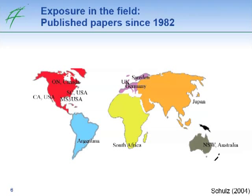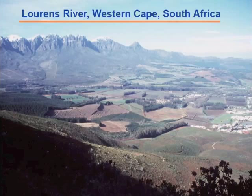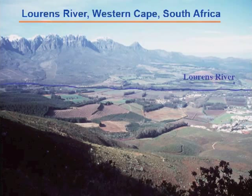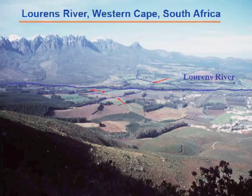Since 2000, a couple of groups looked at insecticide exposure in aquatic systems in some sites in Argentina, South Africa, and Australia mainly. But our knowledge is still relatively low, particularly for the southern hemisphere. I would like to give you an example from South Africa, from the Western Cape — a region strongly dominated by wine growing and fruit orchard growing. Here you can see the Lawrence River flowing through this valley, with several tributaries that may be directly influenced by non-point source pesticide entries, indicated by the red arrows. There are two main entry routes: spray drift and runoff.